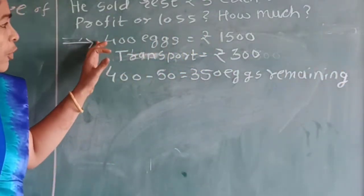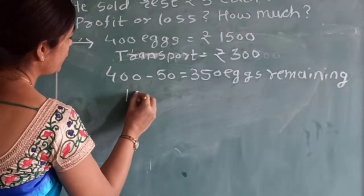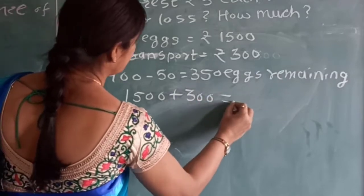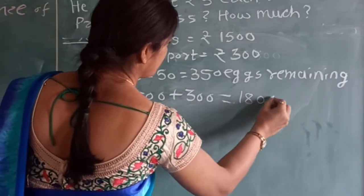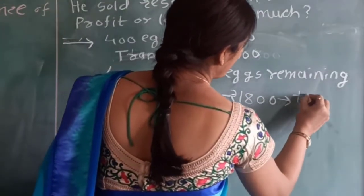And the total cost, look at the total cost. 1500 plus transport 300, Rs.1800. This is the total cost price.